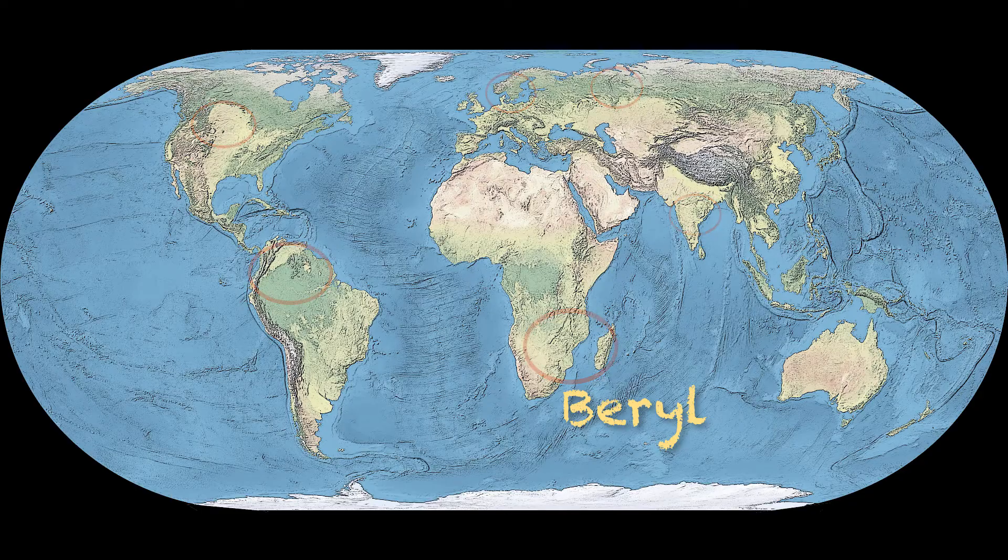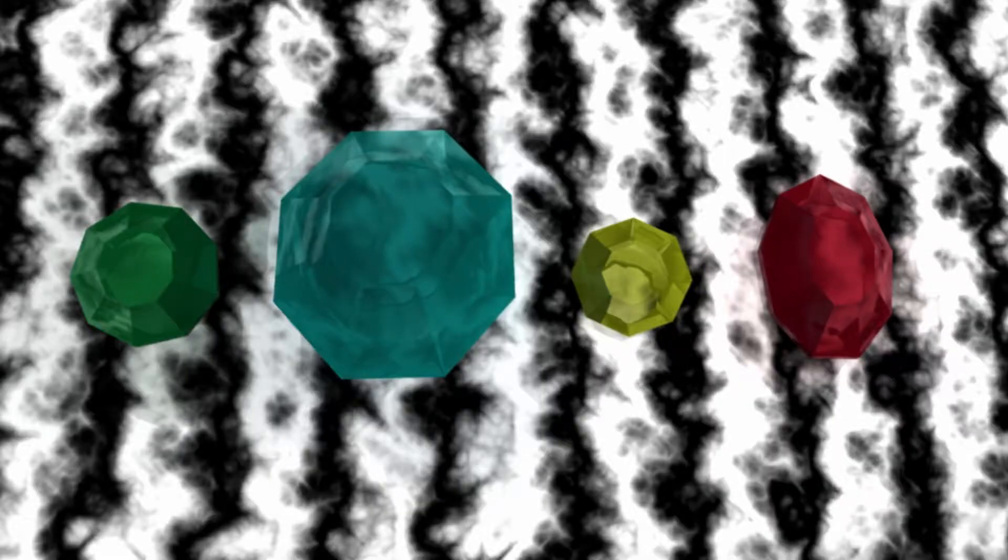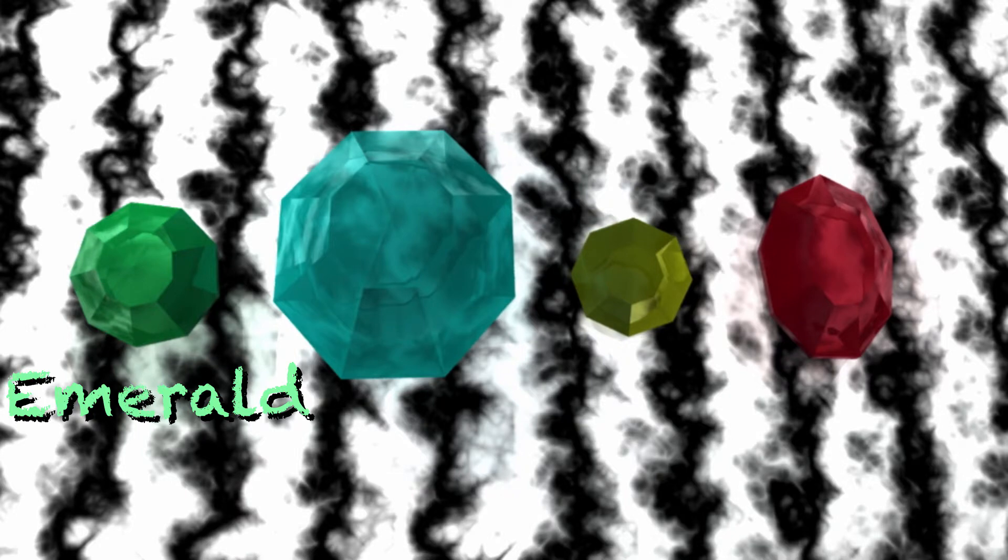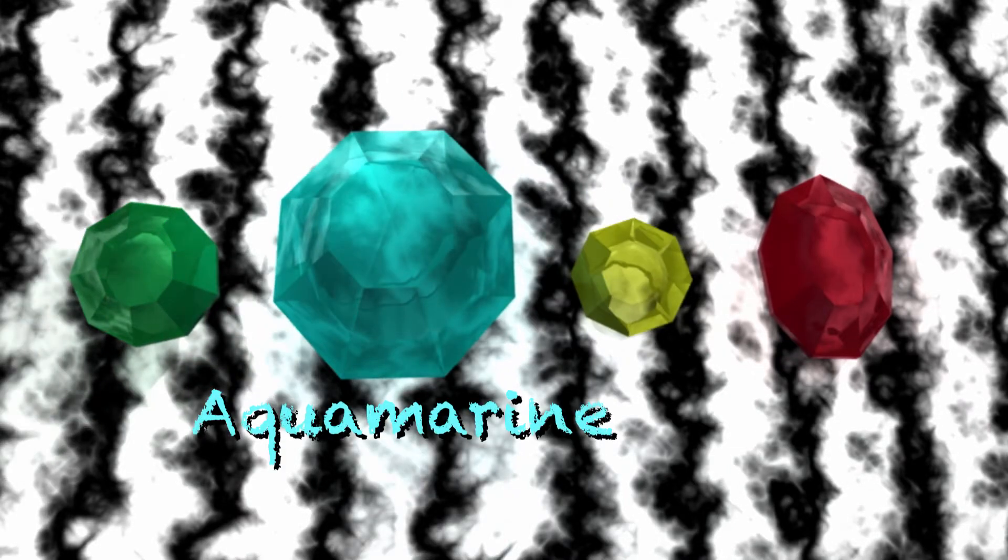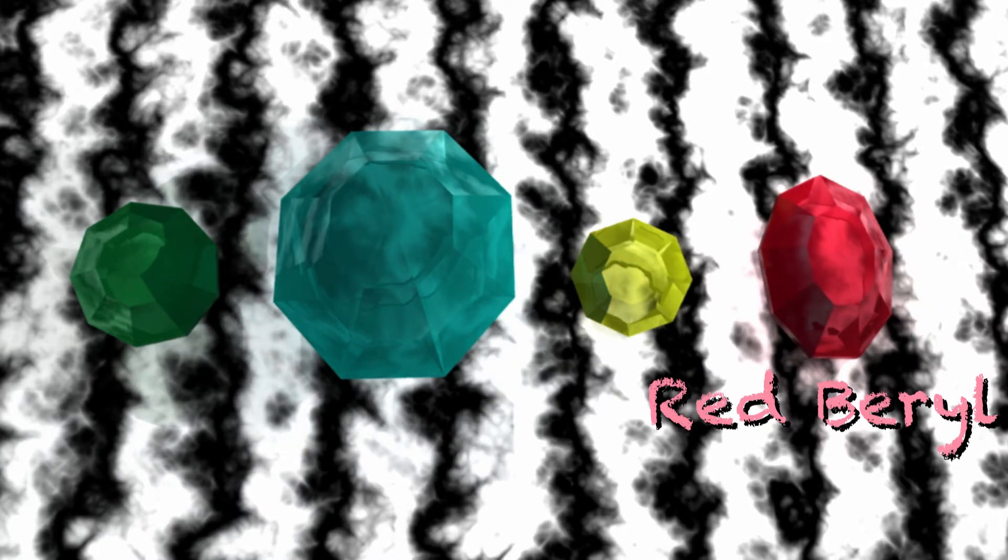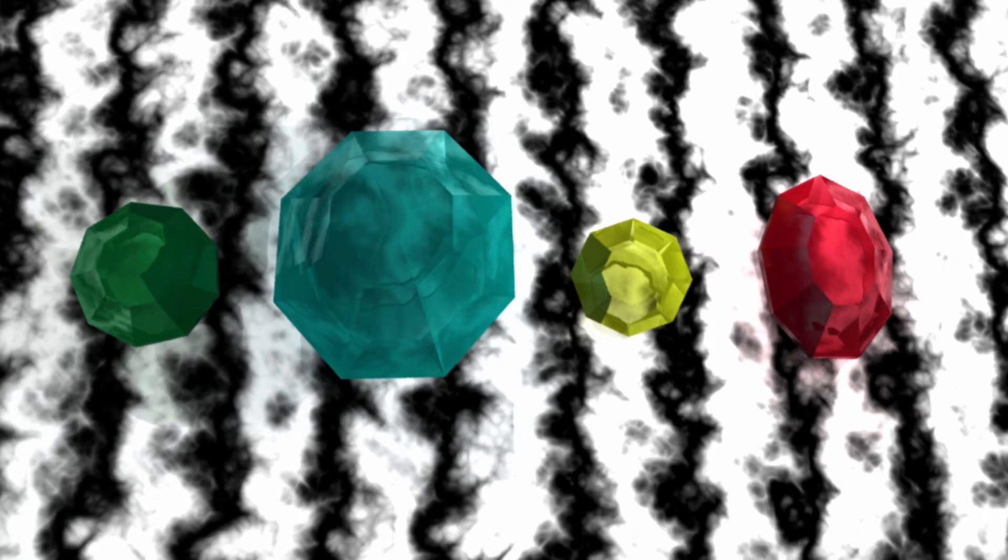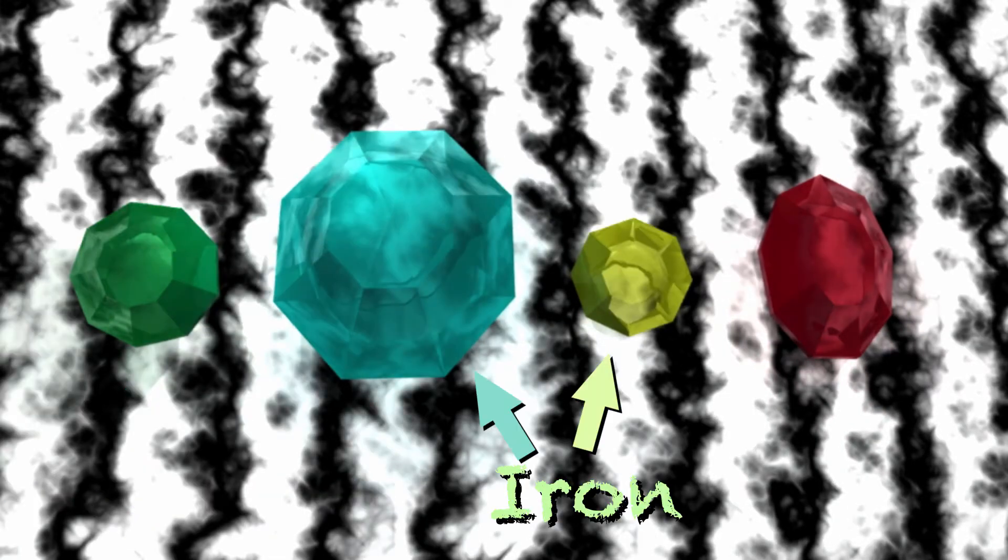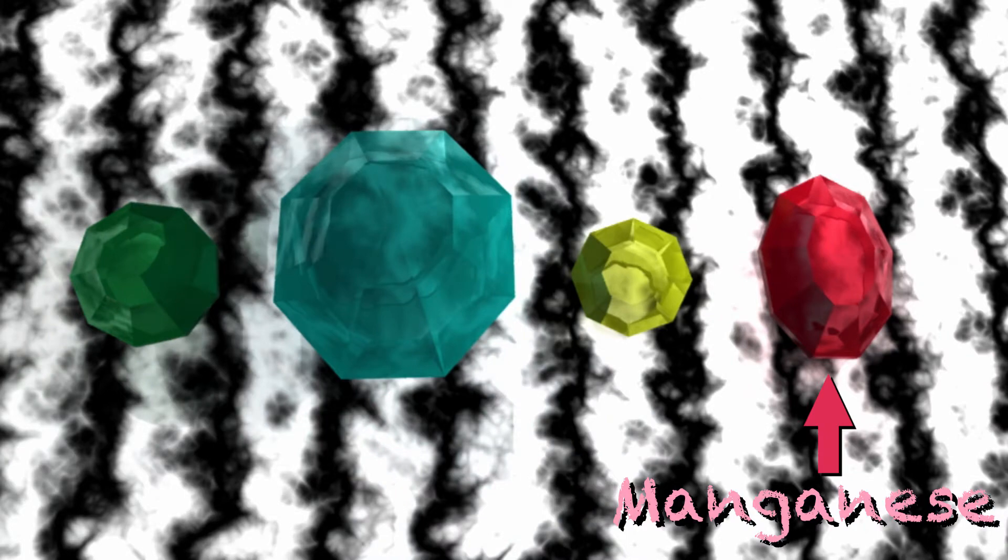When colorful, beryl is a valuable gemstone. Green beryl is called emerald. Aquamarine is blue. Yellow beryl, heliodor or gold beryl. And the red beryl is just red beryl, the rarest and most expensive of them all. The secret to these colored gems is a small amount of chromium, iron, or manganese mixed into beryl.